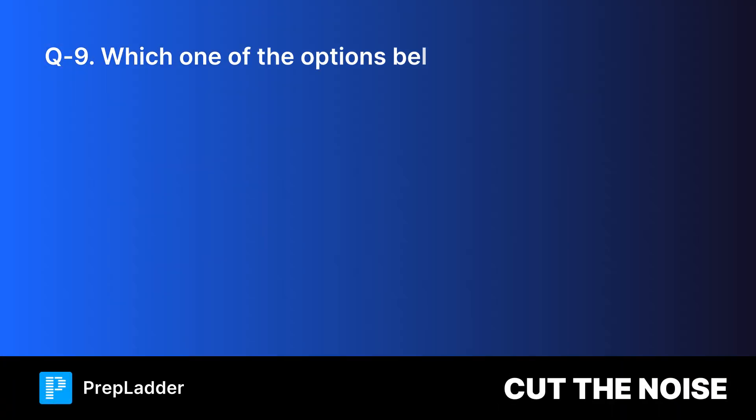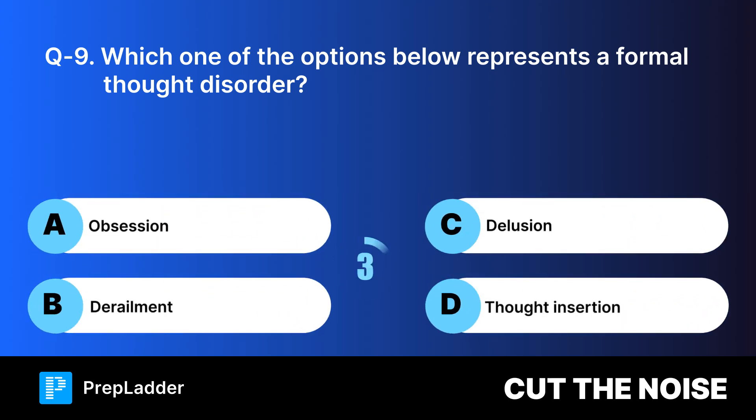Question nine. Which one of the options below represents a formal thought disorder? Your options are, and the correct answer is derailment. Here's the explanation.